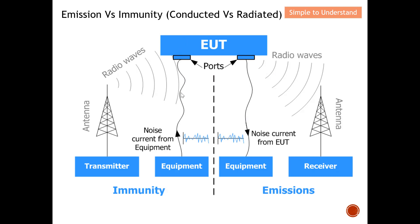In short, conducted means all activities are confined to cables — whether power supply, input, or output cables. As for radiated, the medium is air. For radiated immunity, we generate electromagnetic noise through the air to disturb the DUT and see whether it can still function. For radiated emission, an antenna measures how much emission is released by the EUT through air as the medium. So the key difference: conducted uses cables as the path, while radiated uses air as the medium.